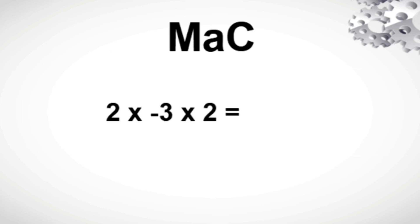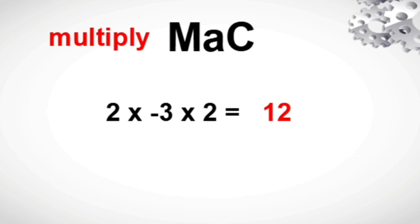Now let us try to apply MAC to solve the following expression. We have positive 2 times negative 3 times positive 2. First, multiply: 2 times 3 times 2 equals 12. Next, count the number of negative integers in the factors — we have 1. Since we have an odd number of negative integers, our product must be a negative integer. Therefore, our final answer is negative 12.